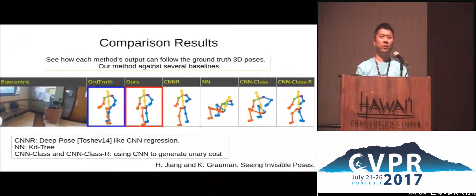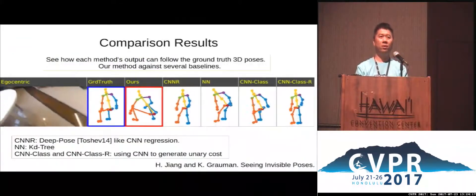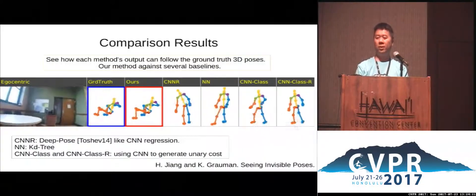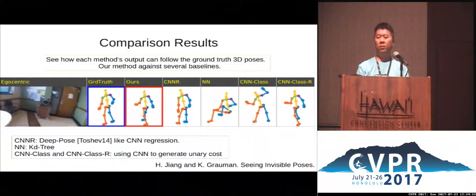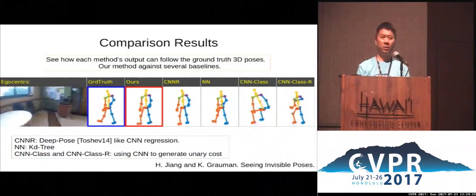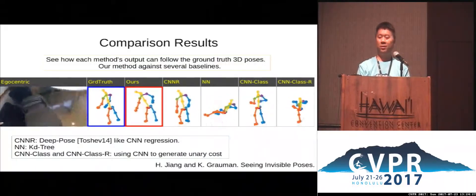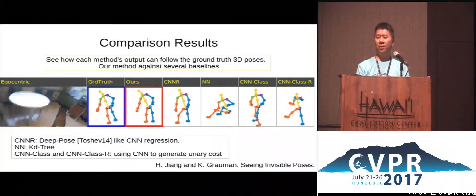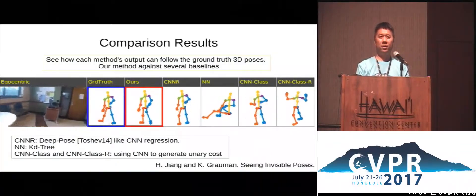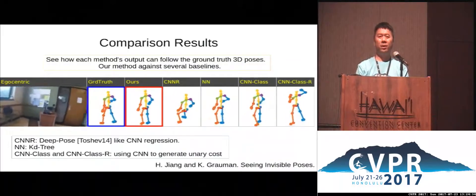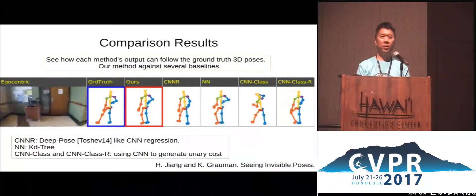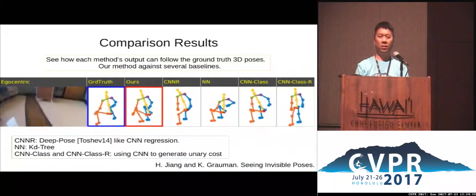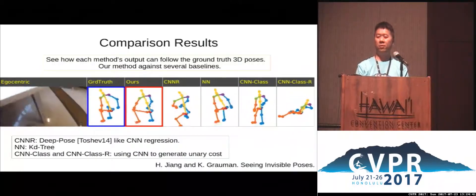This shows some comparison results of our approach with competing methods. Pay attention to how these outputs follow the one in the blue box, which is the ground truth. As you can see, our method gives the best performance. The competing methods include a deep learning pose regression approach, a nearest neighbor KD-tree approach, and two variants of our method.